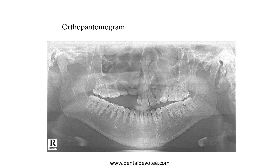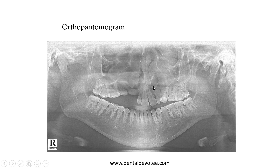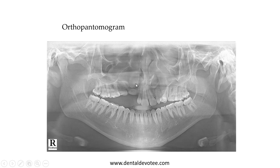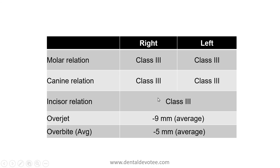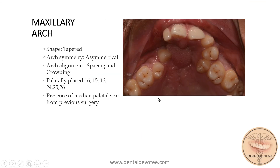This is the orthopantomogram. We can see on the right side there is a cleft defect, as well as on the left side. The canine is missing on the right side, and on the left side the lateral incisor is missing.